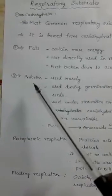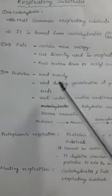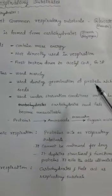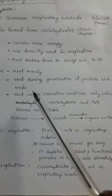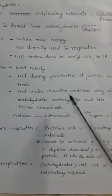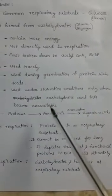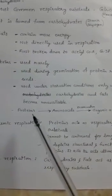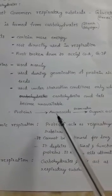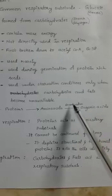Next, proteins. These are used rarely in respiration. Proteins are used during germination of protein-rich seeds like soya bean, and under starvation conditions only when carbohydrates and fats become unavailable. Proteins are firstly converted into amino acids, then converted into organic acids by the deamination method.